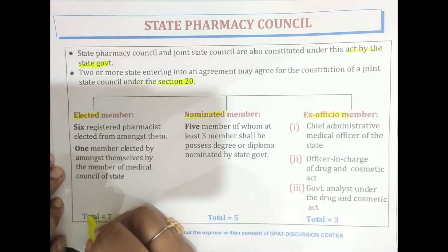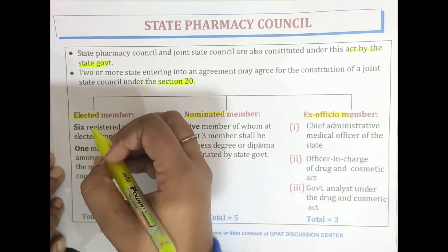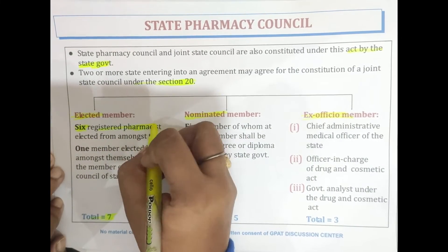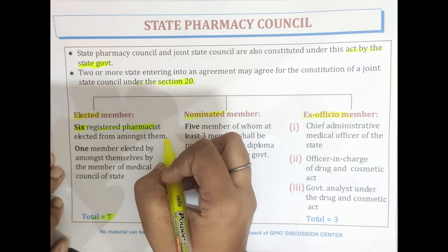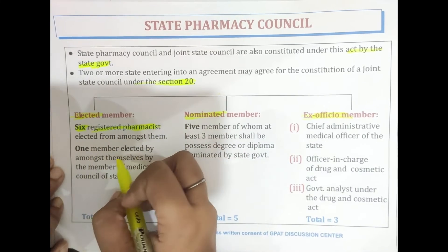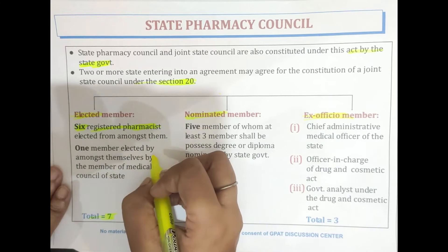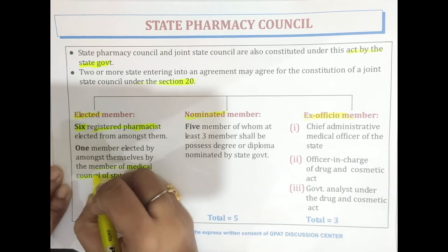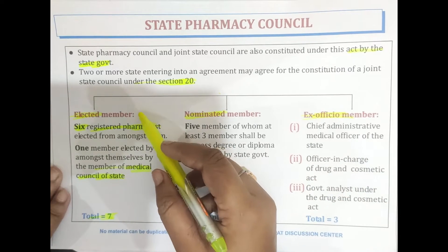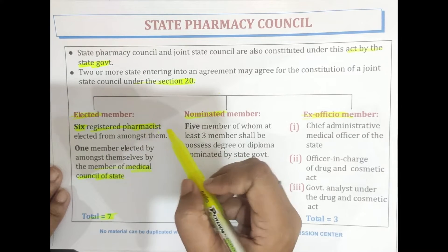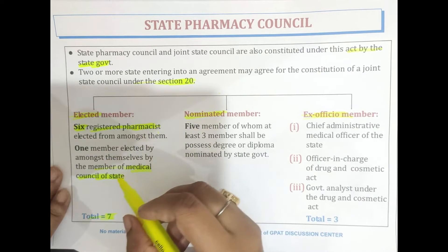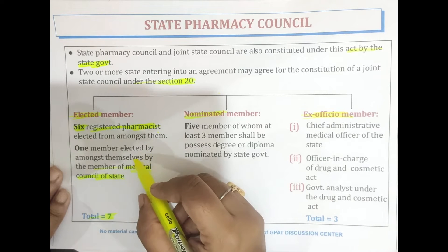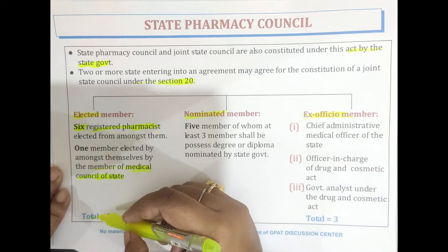The elected members total seven in number. Out of seven, six are registered pharmacists elected from amongst themselves, and one member is elected from amongst the members of the Medical Council of the state. So the total number of elected members is seven.